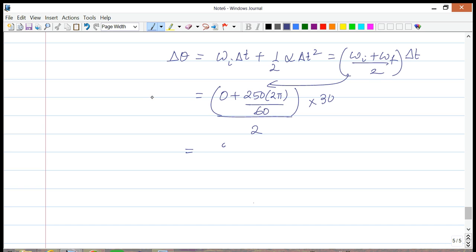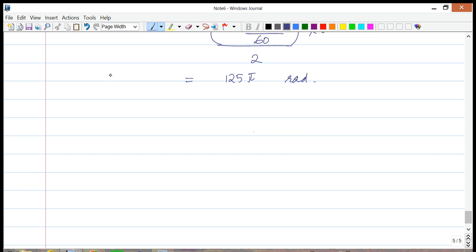This is nothing but 125π - this is the amount of radians. Once we have this, we can figure out the value of the distance traveled. The distance is equal to simply r times delta theta, so it equals 0.5 times 125π, which is 62.5π meters. You can figure out the numerical value and all that.